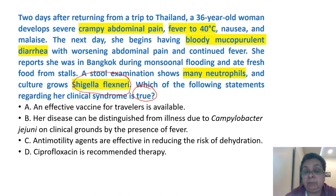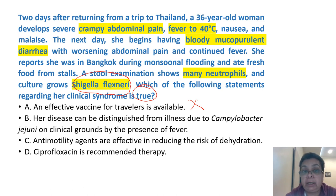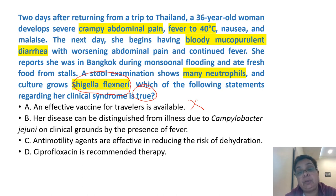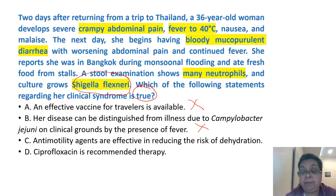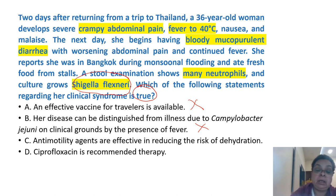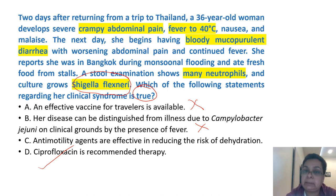An effective vaccine is available for travelers? Not so — there's no vaccine for Shigellosis. Her disease can be distinguished from Campylobacter jejuni illness on clinical grounds? Both Campylobacter and Shigellosis cause invasive bacterial diarrheas and both manifest with fever, abdominal cramps, and bloody mucopurulent diarrhea, so even this statement is incorrect. Anti-motility drugs are effective in reducing the risk of dehydration? We do not give anti-motility drugs in invasive diarrheas because they can worsen the disease and increase the risk of toxic megacolon. The correct answer is: ciprofloxacin is the recommended therapy for Shigellosis.